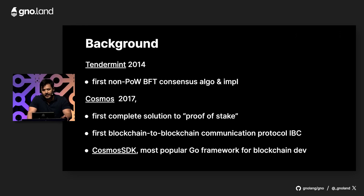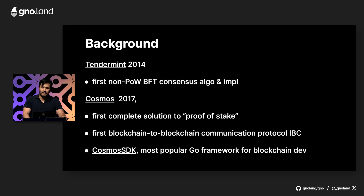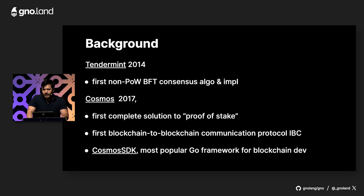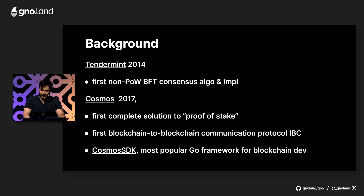In 2017, we launched a blockchain powered by Tendermint called Cosmos. It was the first to offer blockchain-to-blockchain interoperability through a protocol called IBC — interblockchain communication. Along the way, we created the Cosmos SDK. It's the most popular Go framework for blockchain development even today.